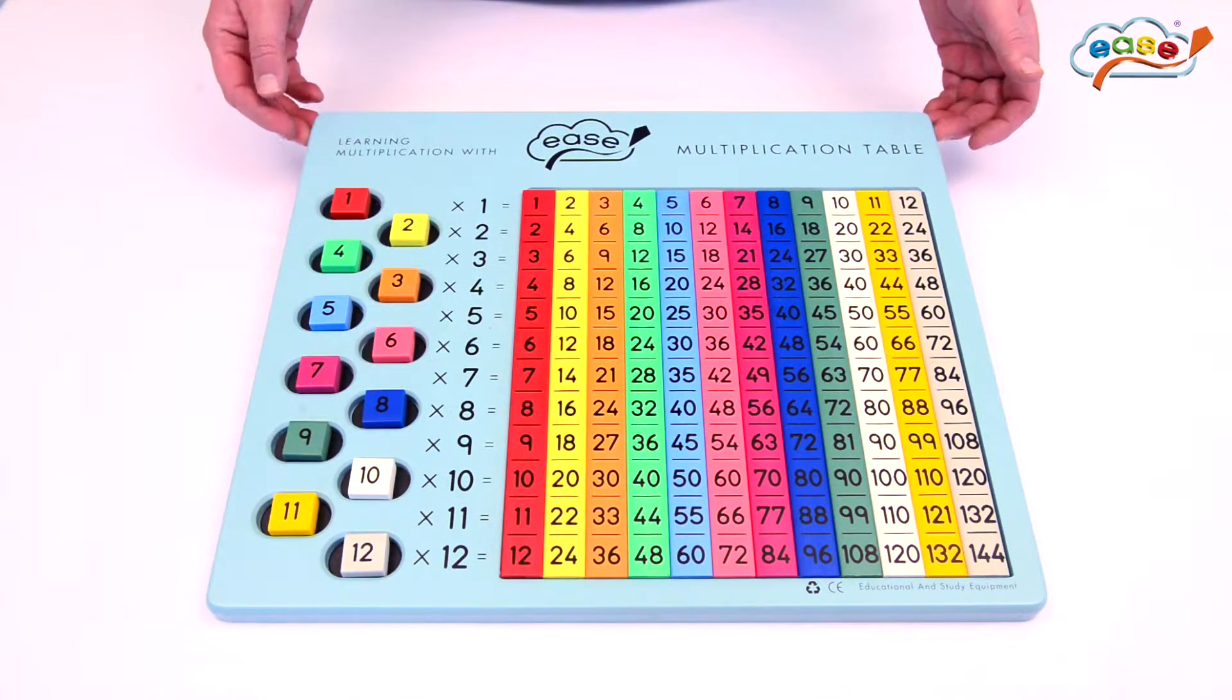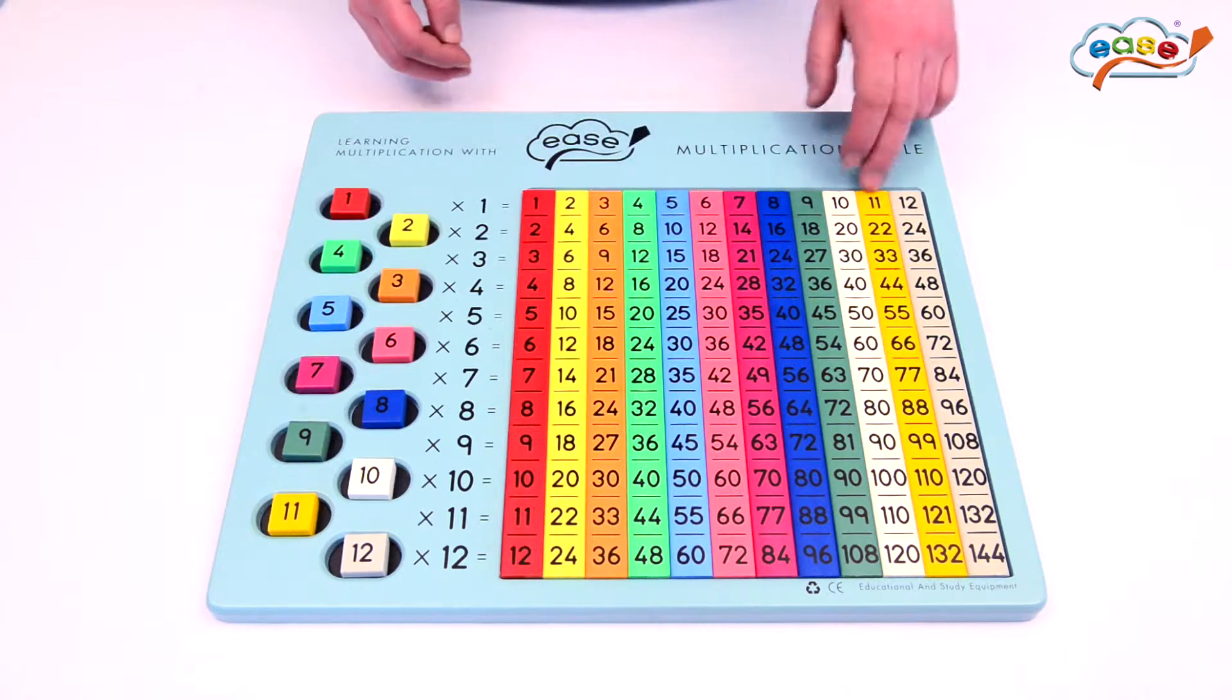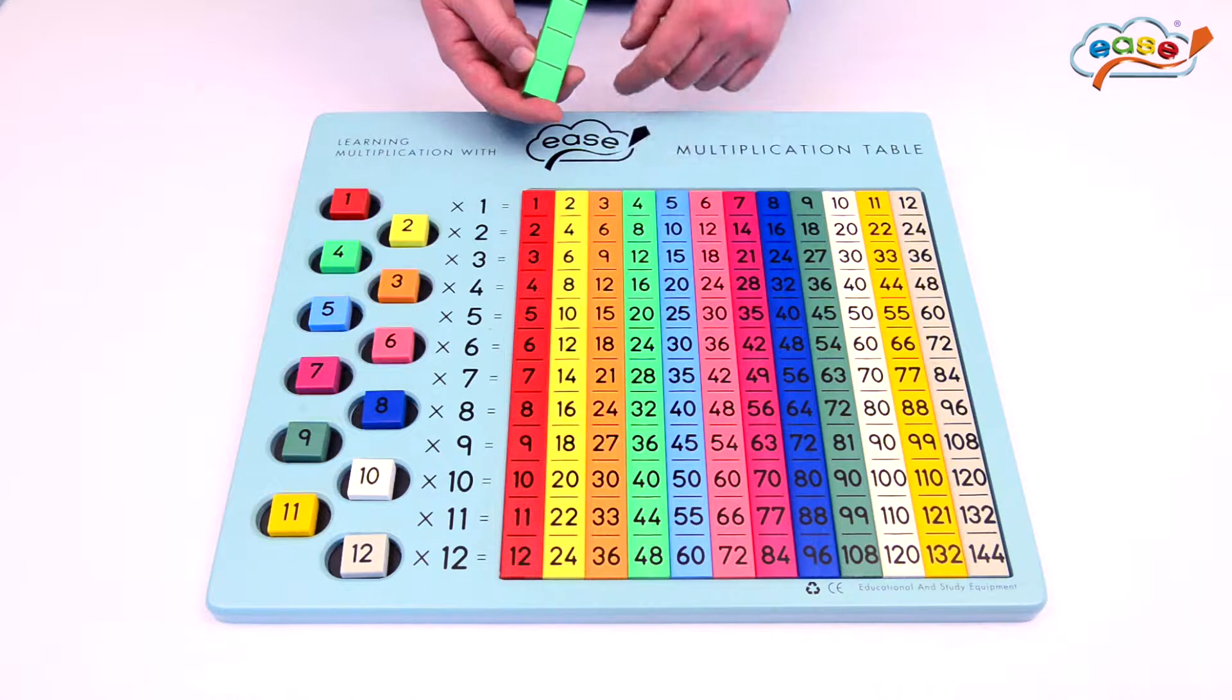Here we have the Ease multiplication table. This follows through with the same color code as the number blocks. So for example, the 4 being green is carried through in our 4 rod.